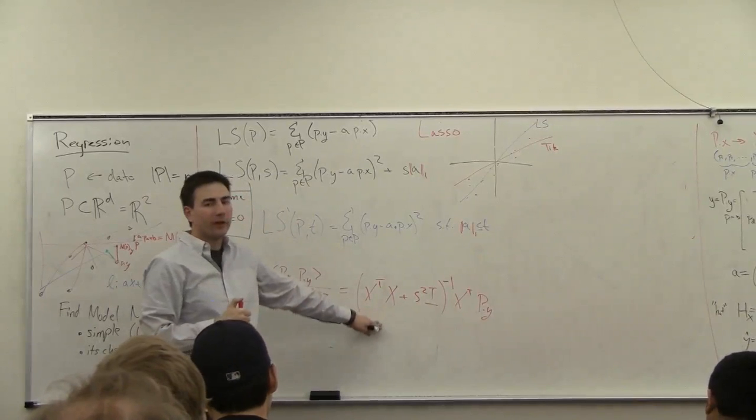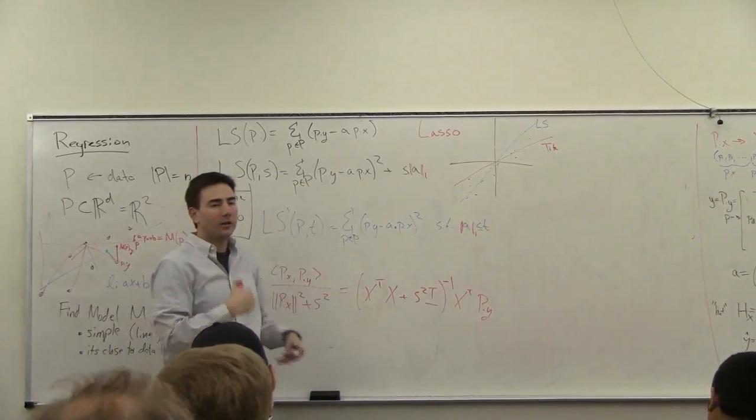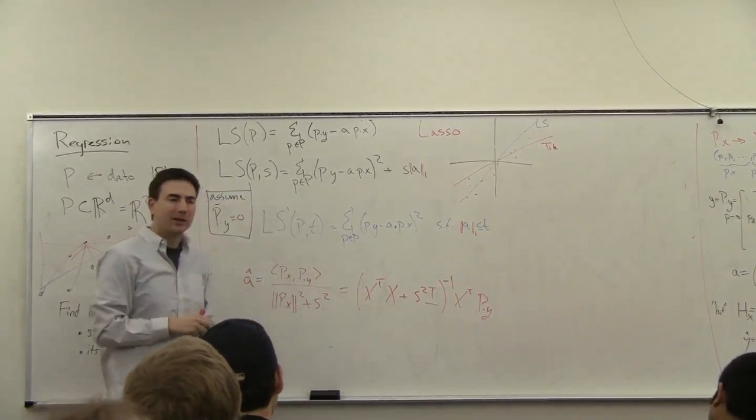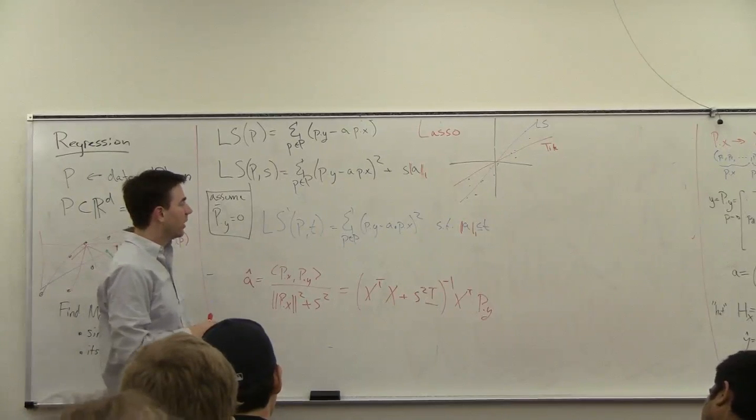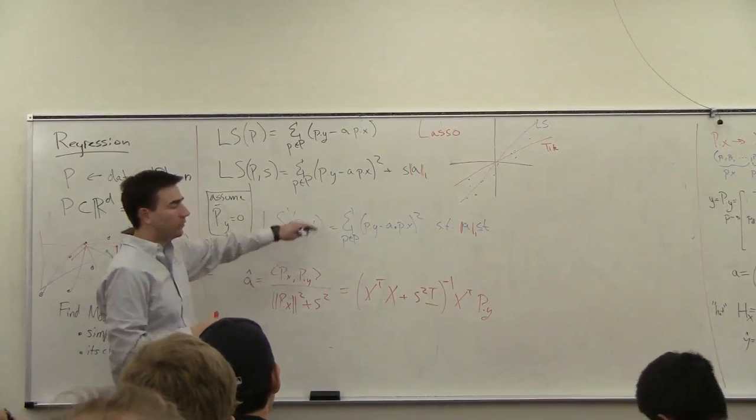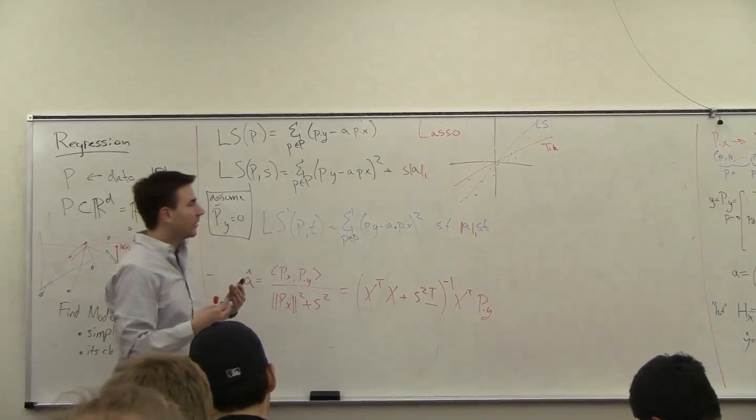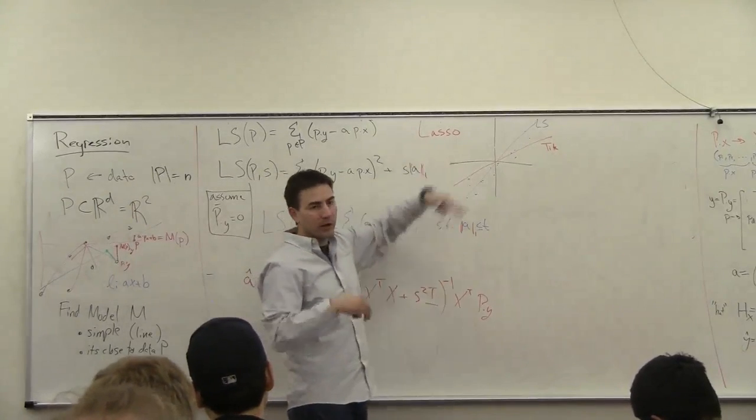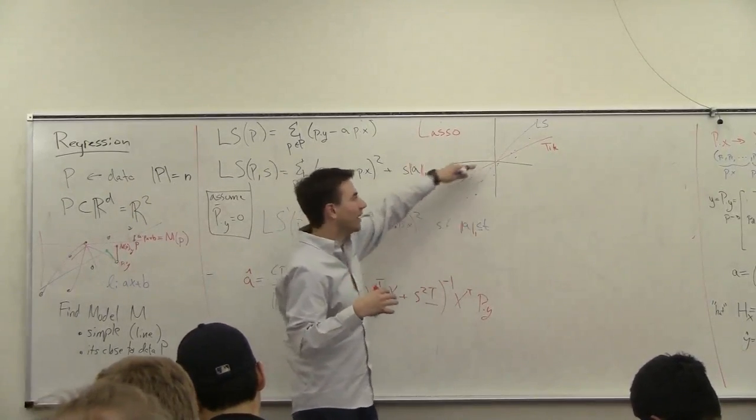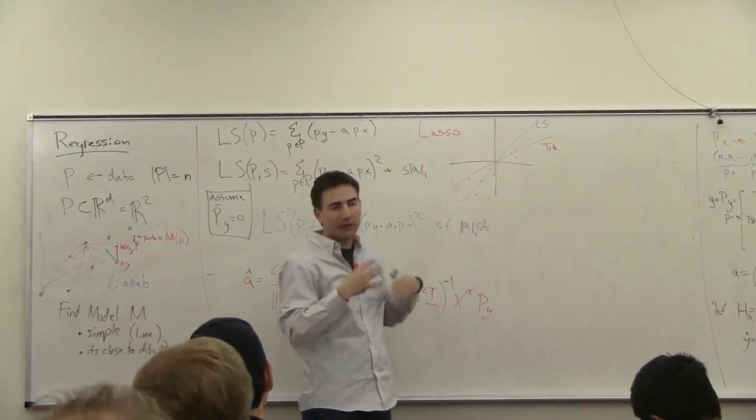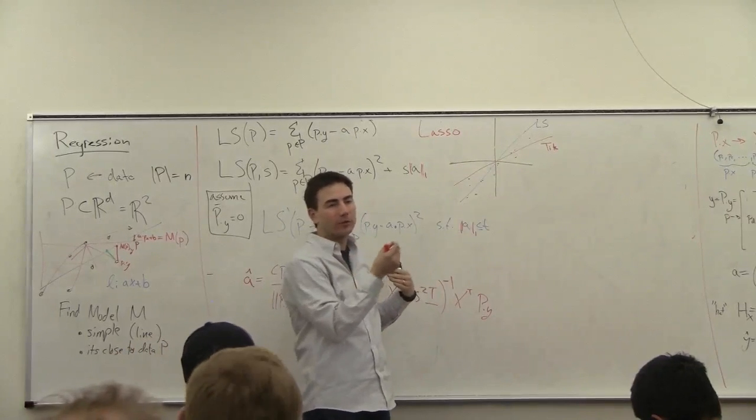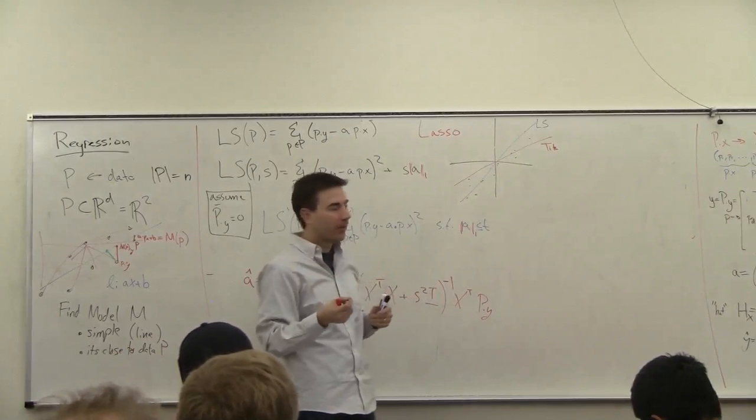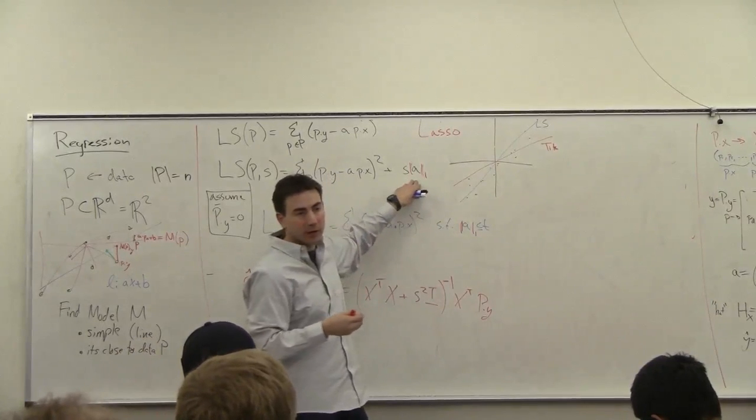You can no longer solve it like this. You again need to use these more complicated techniques in order to solve this. But this will really bias you towards solutions that is going to set a lot of the slopes of the different, this line that becomes like a hyperplane. And a lot of the coordinate slopes of these are going to be exactly zero. And there's this really cool property we'll talk about in higher dimensions.